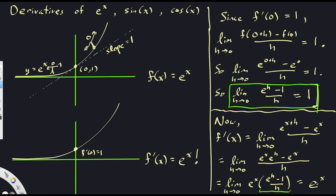So that's what mathematicians would call a proof of the fact that if the function is e to the x, the derivative is also e to the x. The idea is that it's true at the critical point when x is 0, and then we can use laws of exponents to prove it's true everywhere else. This is one to memorize: if a function is given by e to the x, its derivative is also e to the x. It comes up over and over again.